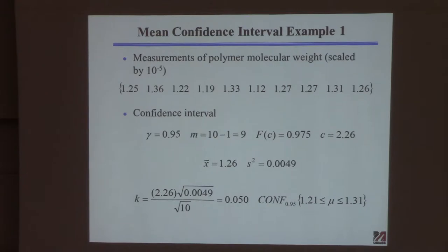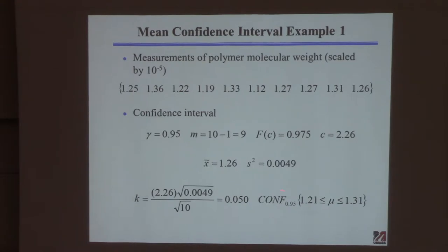So we're 95% confident that the true mean is between 1.21 and 1.31 times 10 to the fifth grams per mole. For example, if you're trying to make a polymer with a molecular weight of 1.2 times 10 to the fifth, that's pretty plausible based on this interval. This gives a much more useful measure than just reporting the mean — it tells you the mean and how confident you are in it.